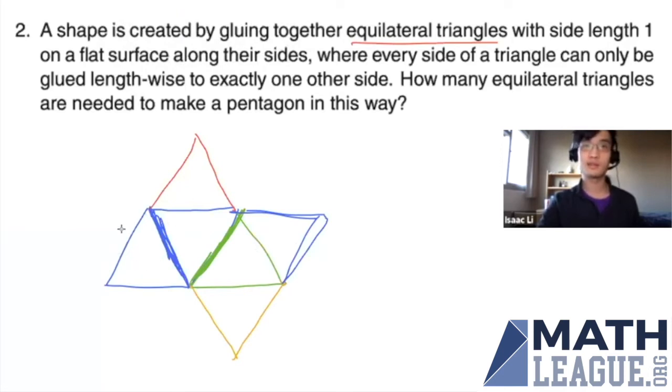So we're going to have to use a fifth triangle. And if we use a fifth triangle, then we can create this shape here. So this shape has five edges in total. One, two, three, four, five. And it required five equilateral triangles.